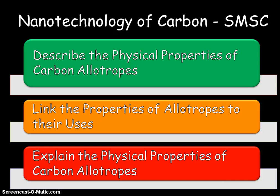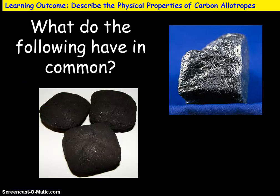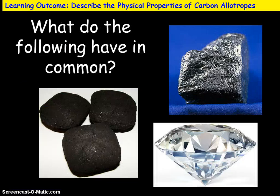Moving on to the allotropes of carbon. We need to be able to describe the physical properties of the carbon allotropes, link their properties to their uses, and then explain why their physical properties are the way they are. There are three allotropes we need to talk about: diamond, graphite, and fullerenes.